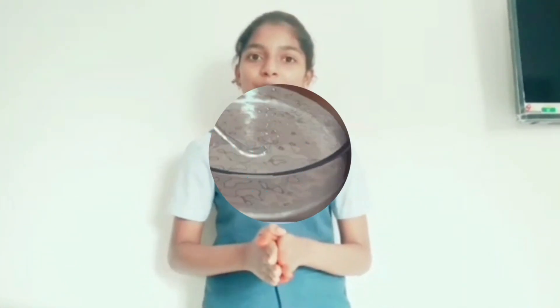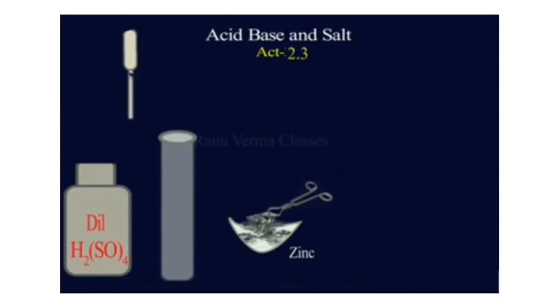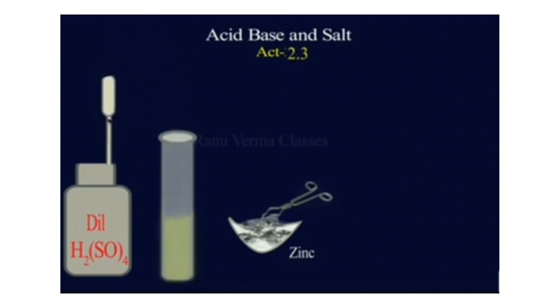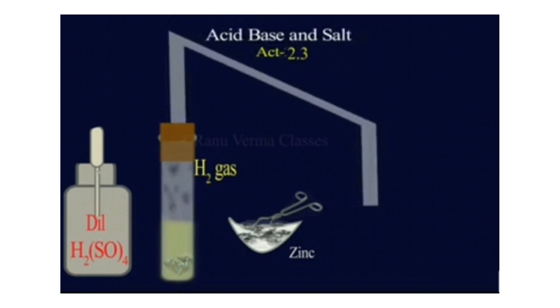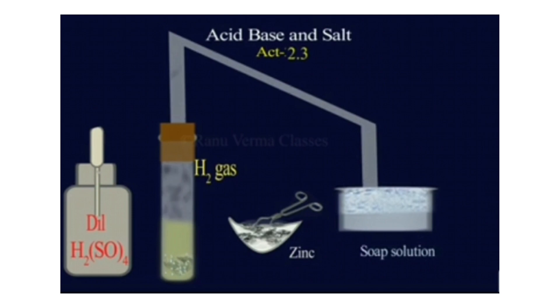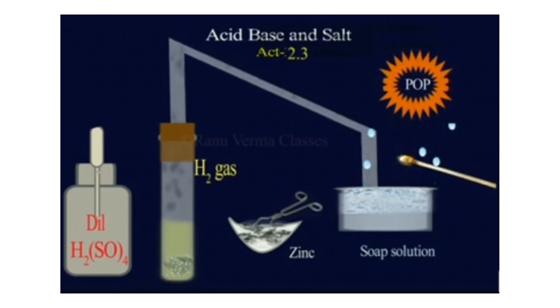Understanding the chemical properties of acids and bases. Let's start with Activity 2.3: how do acids and bases react with metals? Take 5 ml of dilute sulphuric acid into a test tube and add zinc granules to it. Place a rubber cork and a delivery tube so that the bubbles will pass through the delivery tube into the soap solution. You can observe some bubbles — place a candle or matchstick near the bubbles and you will observe a pop sound.